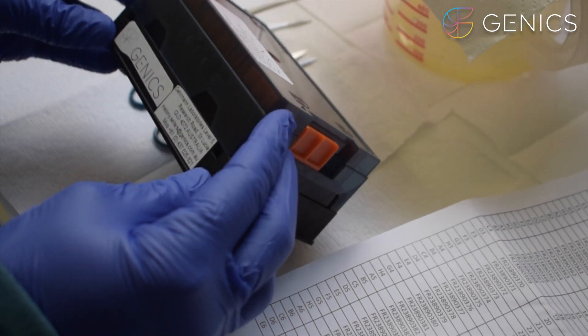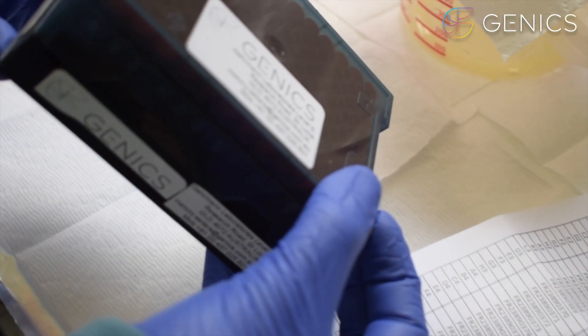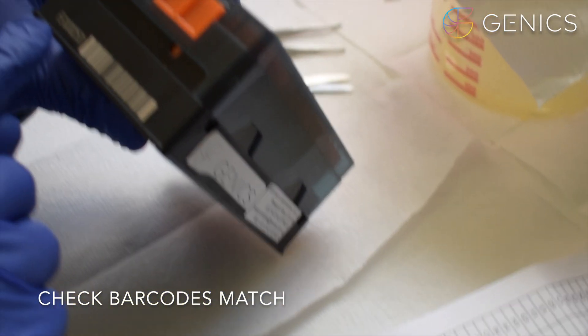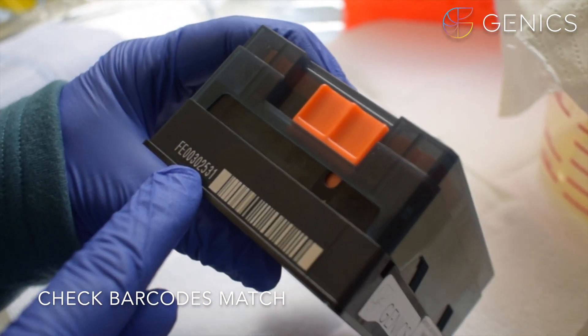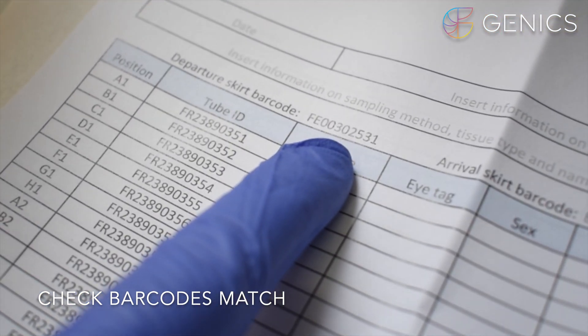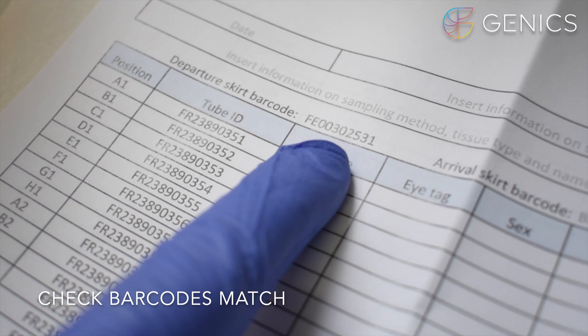On this box our skirt barcode which is on the end here is FE00302531 and this barcode needs to match your data sheet in this position here.